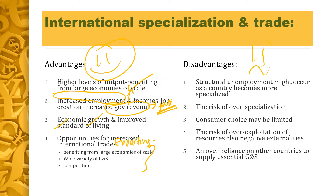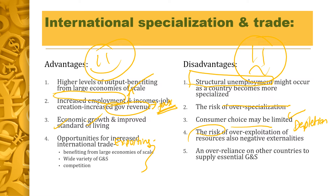On the other hand, let's look at the disadvantages. First, structural unemployment might occur as a country becomes more specialized — they are only producing particular goods, and people who are not capable of joining that domain will unfortunately be left unemployed. Also, there is the risk of over-specialization and relying on other countries to get whatever they are missing. And because we are only producing what we are good at, the choices for the consumer might be limited. The fourth disadvantage would be the risk of over-exploitation of resources.